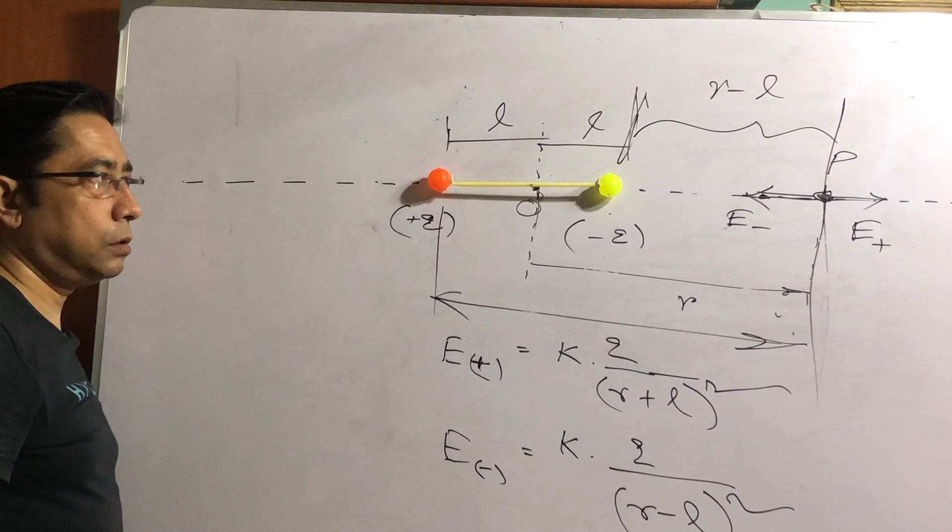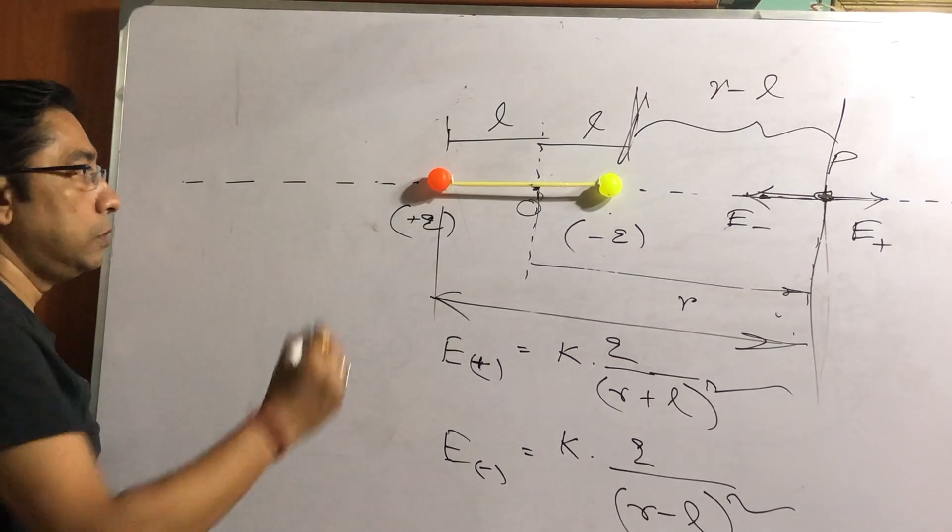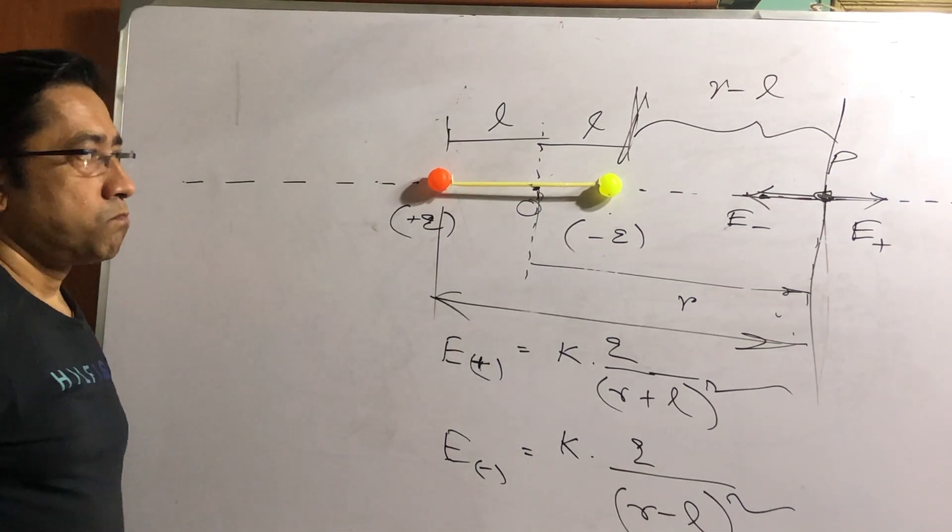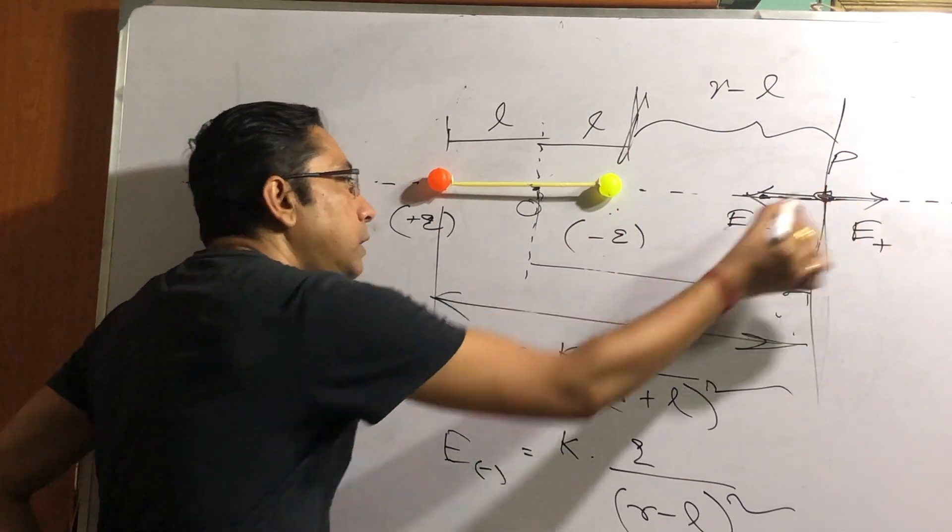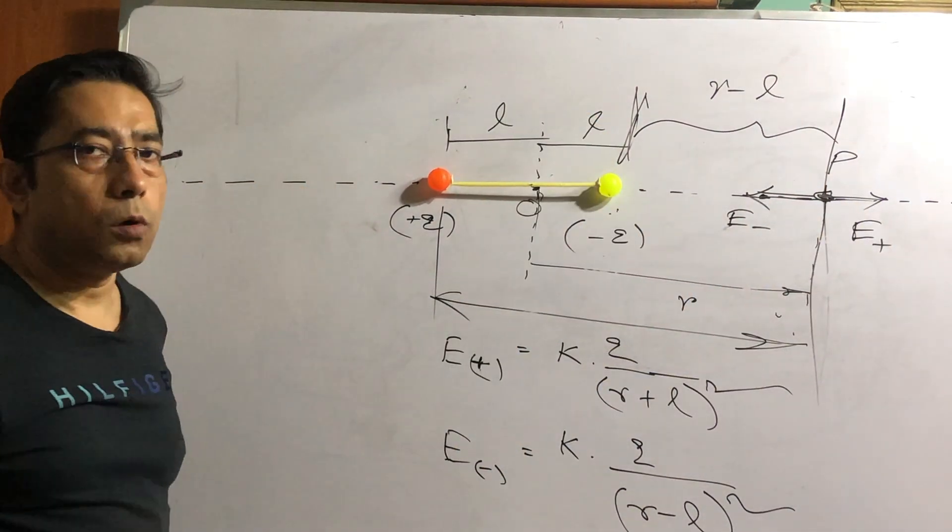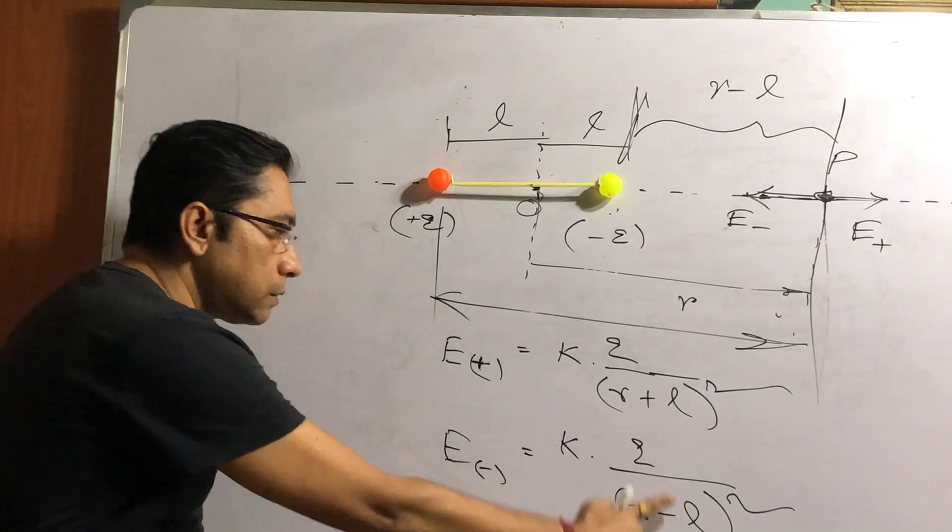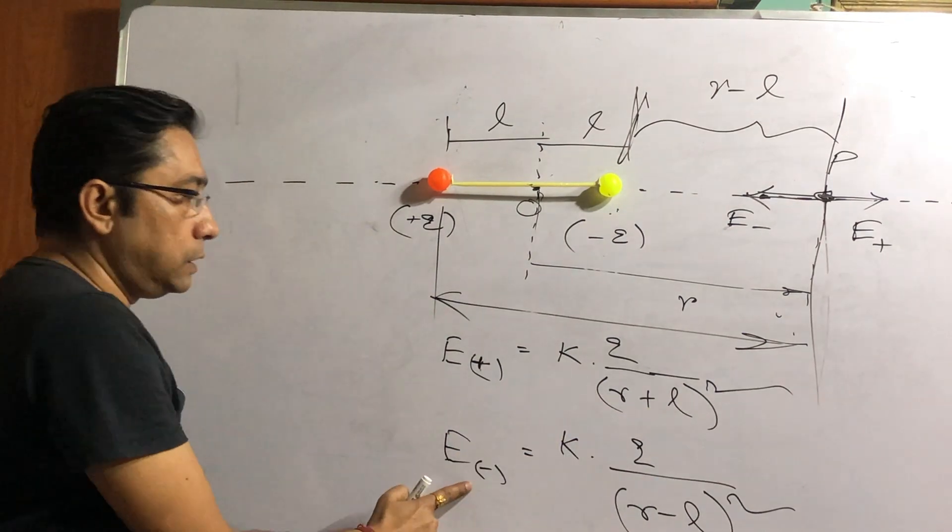Which electric field would be greater, due to the plus or minus? Yes. Minus charge is closer to point P, so effect of minus charge would be more. Otherwise, mathematically, see this: plus, minus. So this is going to be more.